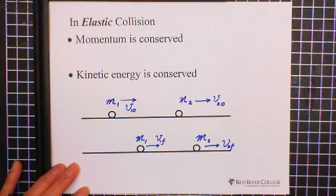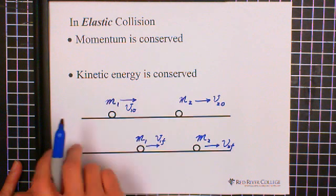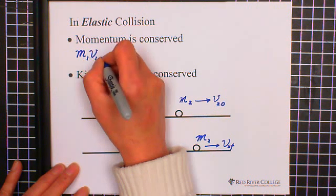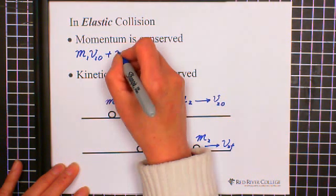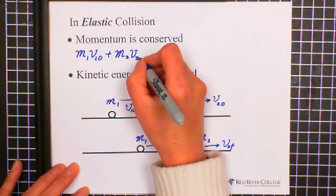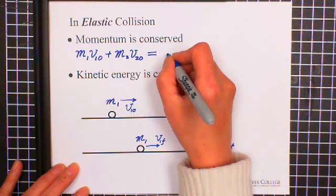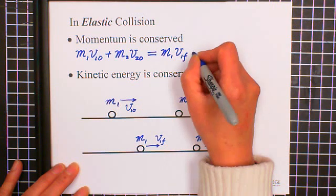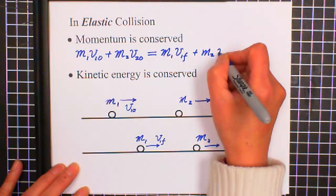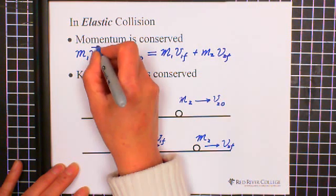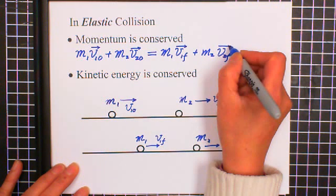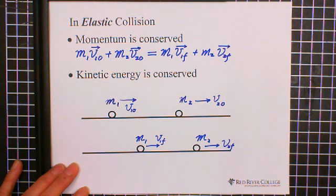So momentum is conserved. Momentum is conserved means before collision we can write M1 V1 initial plus M2 V2 initial equals M1 V1 final plus M2 V2 final. This is all vectors. In one dimension, only positive and negative are different.